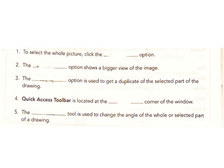4. Quick Access Toolbar is located at the top left corner of the window. Answer: Top Left. 5. The Rotate tool is used to change the angle of the whole or selected part of a drawing. Answer: Rotate.